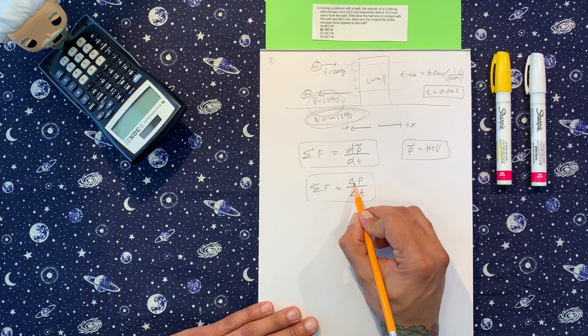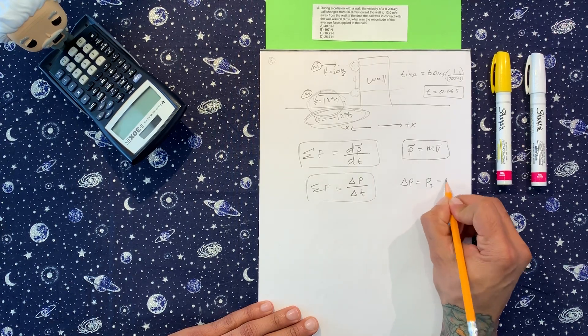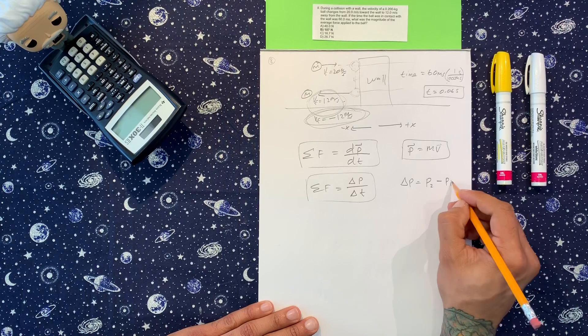And we know that the change of something is going to be p final minus p initial.